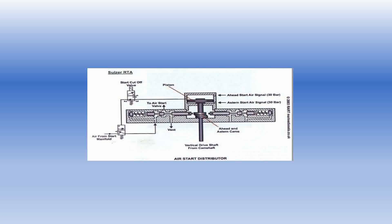Next, we come to the starting air distributor. As you can see, there is a servo piston, there is a cam, there is a piston, there is a pilot valve, pilot valve followers, there is a spring, as well as two valves — one is a solenoid valve and another one is a pneumatic valve.